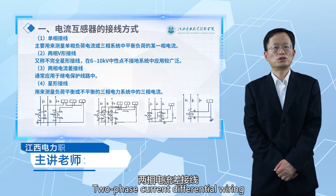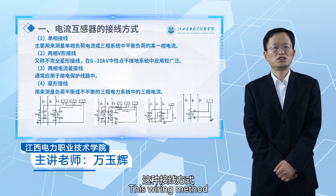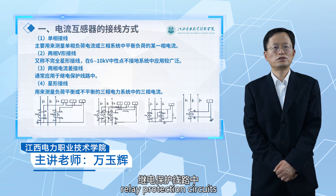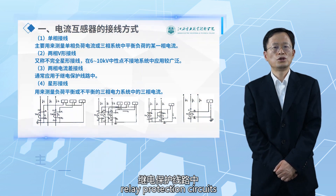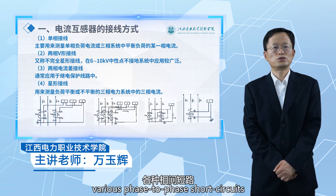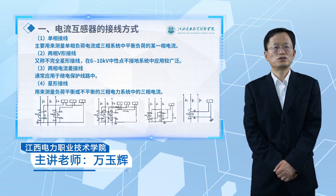The third is two-phase current differential wiring. This wiring method is usually applied in relay protection circuits. It can detect various phase-to-phase short circuits, but with different sensitivities.